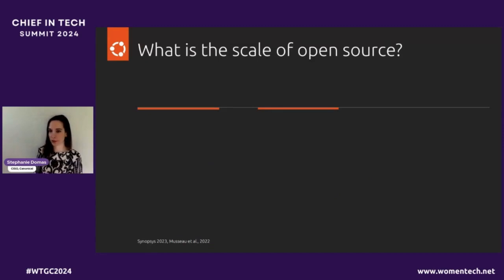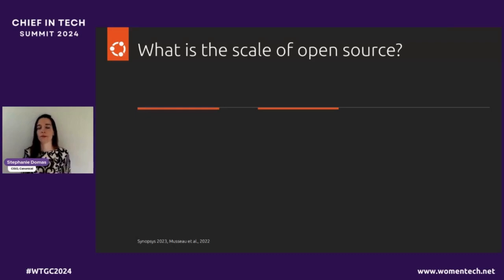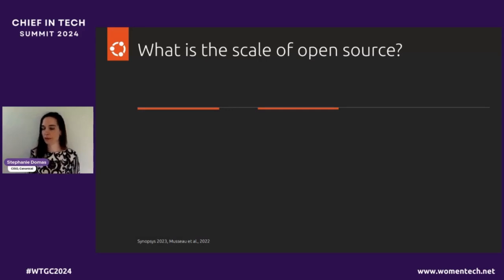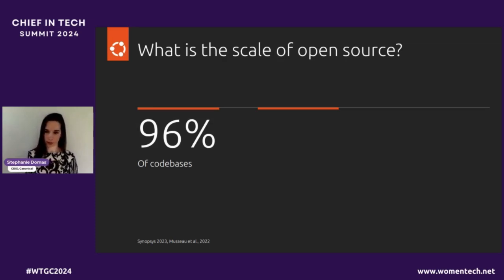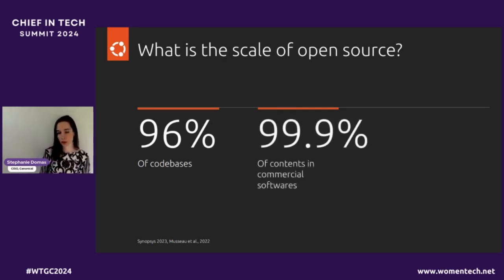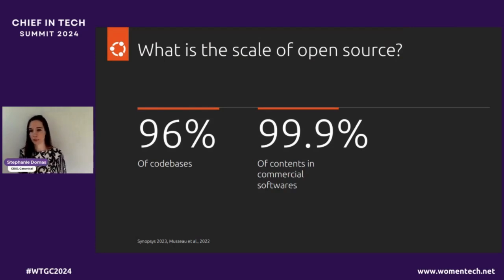But what's the scale of open source? Open source is immensely prevalent. If you're a leader inside of a company that writes software, I feel incredibly confident in saying that open source is probably used inside of your company, whether or not you know it. It is estimated that 96% of software codebases in the world use open source inside of them. And when you look at commercial applications — proprietary things that customers or companies sell — there can be up to 99.9% open source in those. That might seem really strange. You might think, what's the point of selling a piece of software that's predominantly open source?